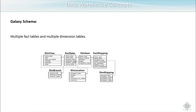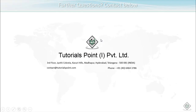In the galaxy schema, unlike the star and snowflake schemas which have one fact table, we have multiple fact tables as well as multiple dimension tables. We can see two fact tables here: fact sales and fact shipping. Both of these fact tables share their dimension tables among them. This is the key difference between the star schema, snowflake schema, and galaxy schema. In summary, we covered aggregation, its use in the data warehouse, and the three types of schema: star, snowflake, and galaxy.